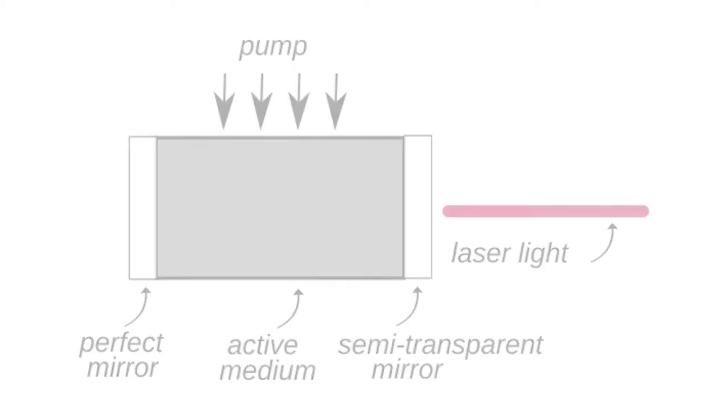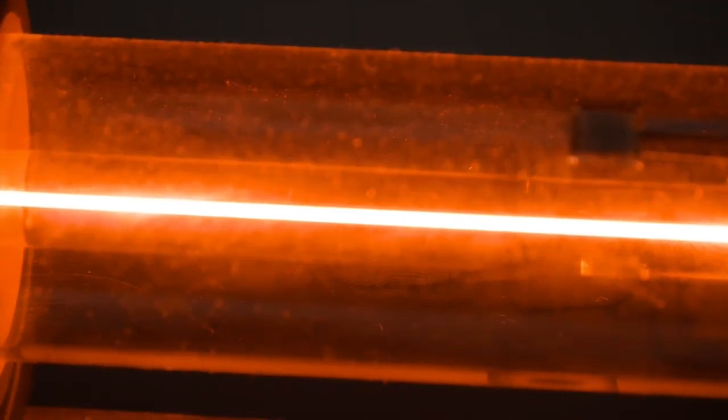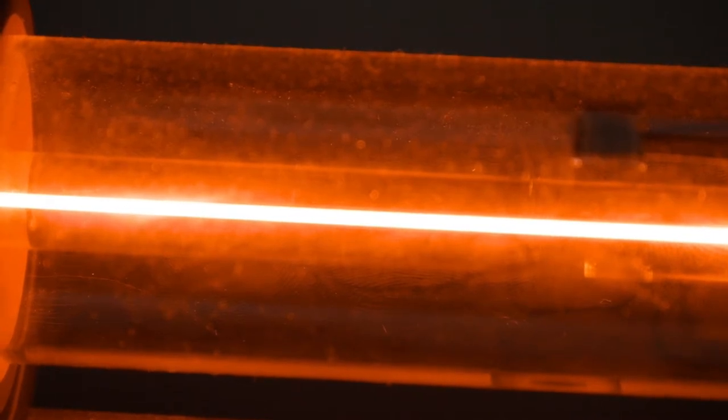First we switch on the laser, that is we generate a gas discharge in the glass cylinder by applying the voltage to the filament. The gas begins to glow pinkish red.